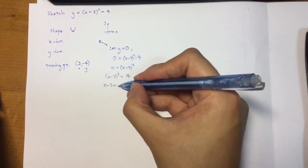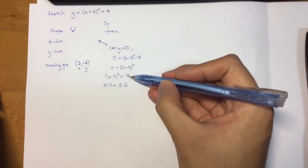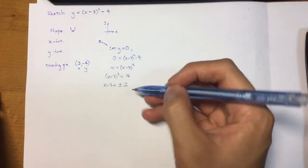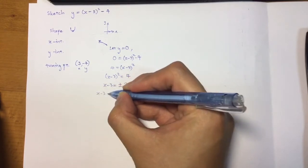Okay, bear in mind when I do that, I create two answers or two values. When I square root 4, I get plus or minus 2. And I'll have two values here.